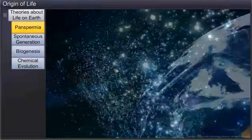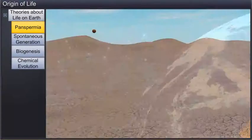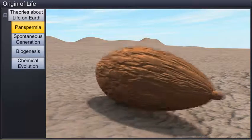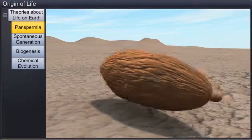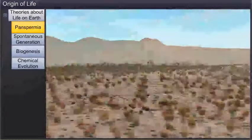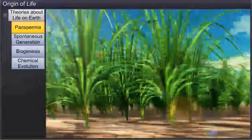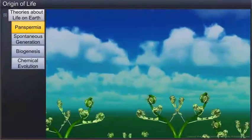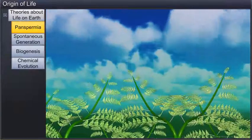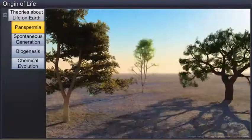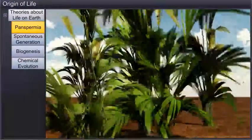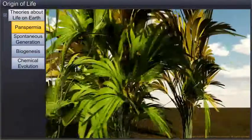It explains that units of life called spores were transferred to different planets. Panspermia assumes that seeds of life exist all over the universe. Therefore, the life on Earth may have originated after one such seed was deposited on the Earth from somewhere in the universe. This theory generates much interest even today.